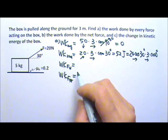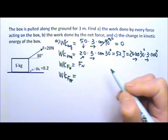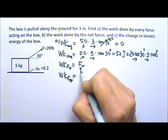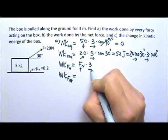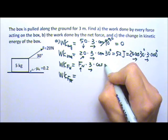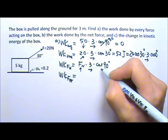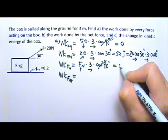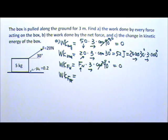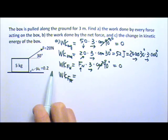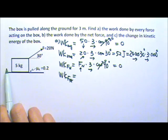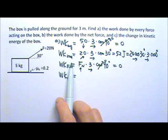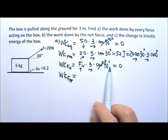For the normal force, it doesn't matter how large it is — it points upward while the displacement is to the right, so the angle between the two is 90 degrees and the work is 0. No work is done by the normal force because the box slides along the surface, the displacement is along the surface, and the normal force is always perpendicular to the surface.